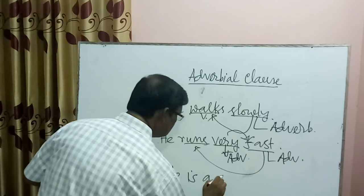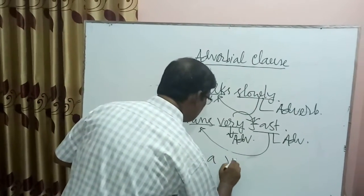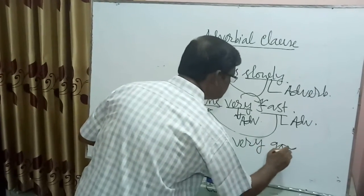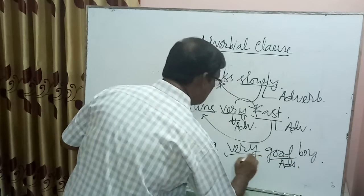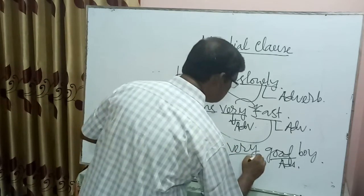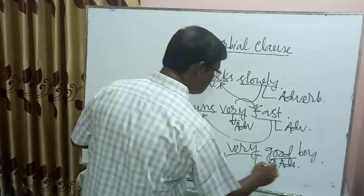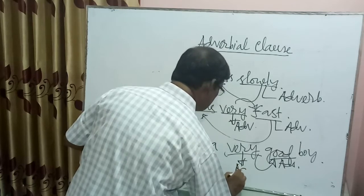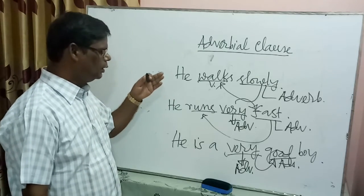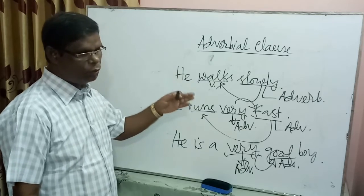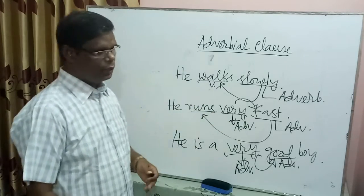Another example: 'He is a very good boy.' Here 'good' is an adjective. How good? Very good. The word 'very' qualifies the word 'good', which is an adjective. So this is also Adverb. In this way, the word which qualifies all other parts of speech except noun and pronoun, and also qualifies a sentence, is called Adverb.